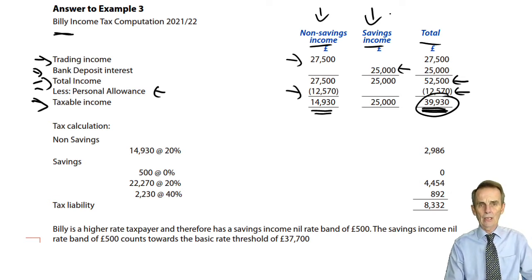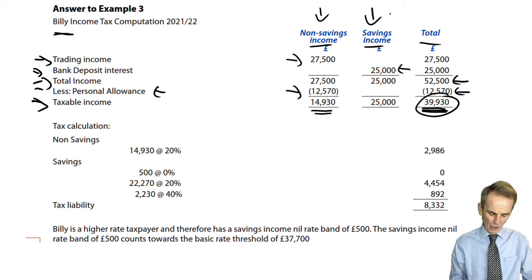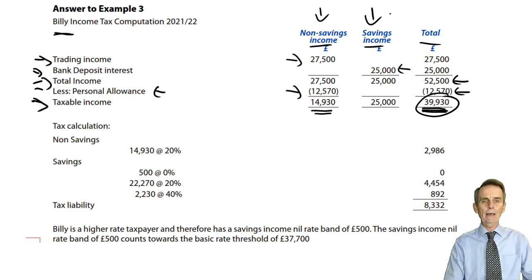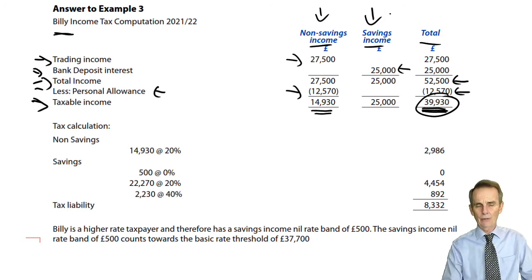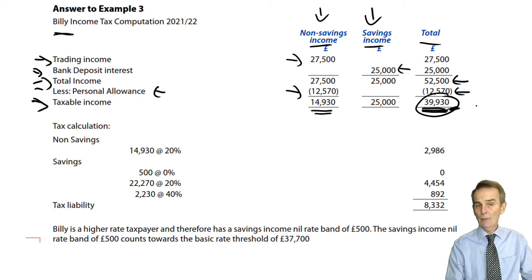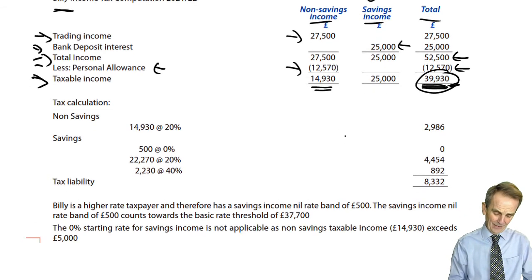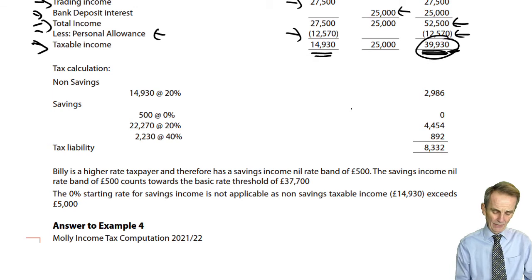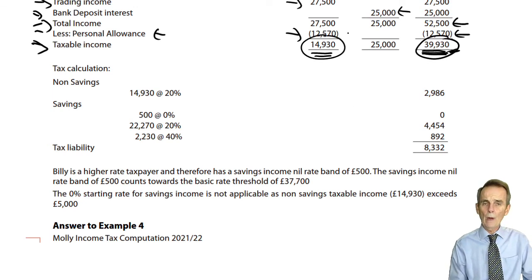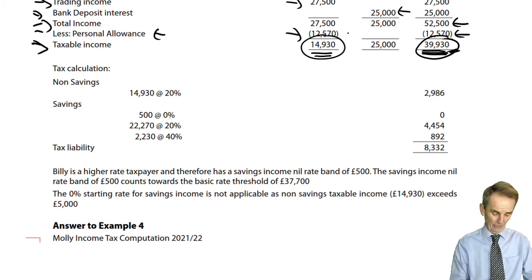It also means that the savings income won't just have a nil rate band, and most of it within the basic rate band - a little bit of it, the bit over the total of £37,700 up to £39,930, goes up into the higher rate. Non-savings income is taxed first: £14,930, all of it well within our basic rate band limit of £37,700, so all of that will be at 20%.